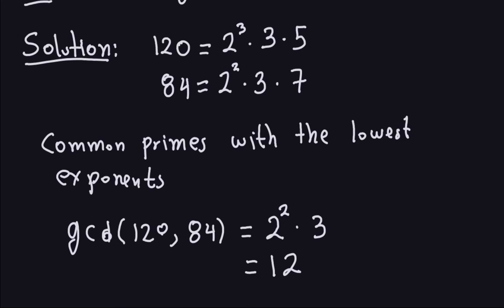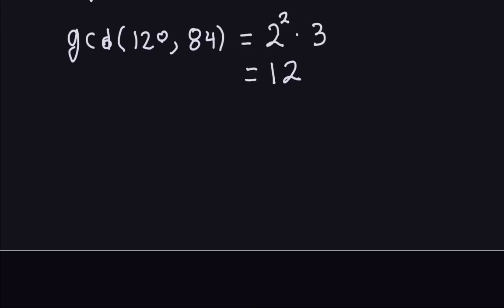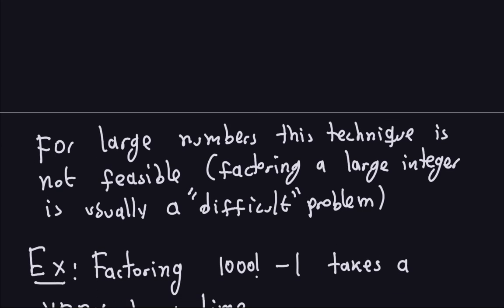This is a good way to compute the GCD, provided that the numbers you are dealing with are small. If the numbers are large, factorization is usually not something you want to do, because factorization is usually a hard problem. Even though you've been doing this for small numbers, doing this for large numbers really becomes a big problem.